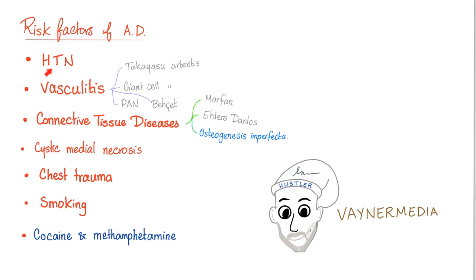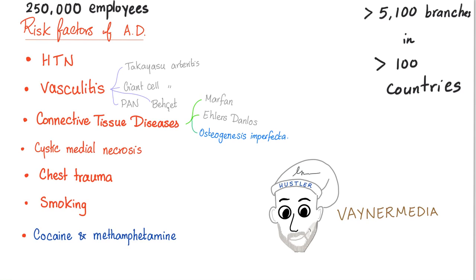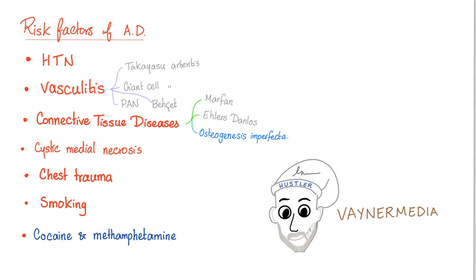What are the risk factors of aortic dissection? Hypertension — of course, being CEO of JPMorgan Chase brings hypertension. Also: vasculitis such as Takayasu arteritis, giant cell arteritis, polyarteritis nodosa, Behçet syndrome; connective tissue disease such as Marfan's, Ehlers-Danlos, osteogenesis imperfecta; cystic medial necrosis; chest trauma; smoking; cocaine and methamphetamine.